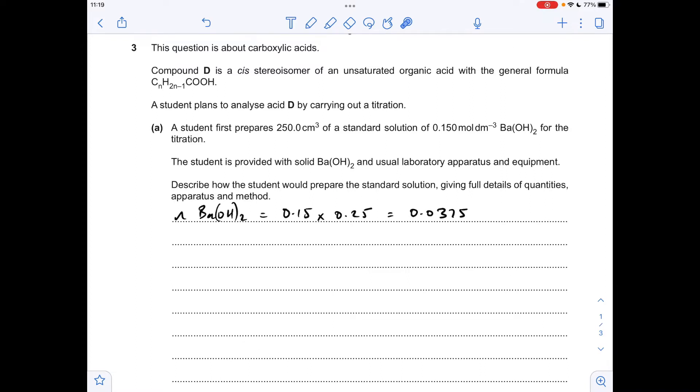The first thing we'll do is work out the moles of barium hydroxide. We know it's got to have this concentration and this volume. So the moles is concentration times volume. Remember, the volume's got to be in decimeters cubed. So we need that many moles of barium hydroxide. Now we're just going to convert that to grams, which we do by multiplying the moles by the MR of barium hydroxide. So we're going to need 6.42 grams.